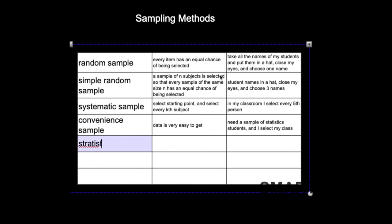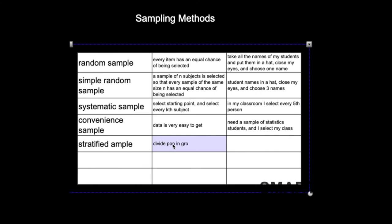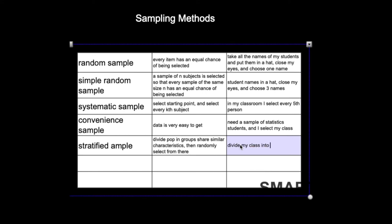A stratified sample is where I divide the population into groups that share similar characteristics, then randomly select from those groups. For example, I divide my class into males and females — males share similar characteristics, females share similar characteristics — and then I randomly select from each group to collect data for my sample.